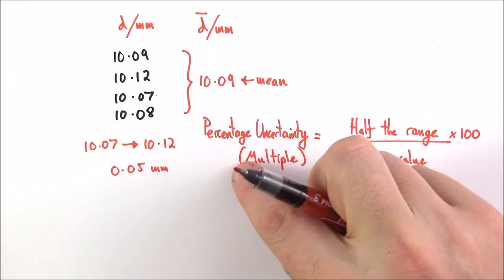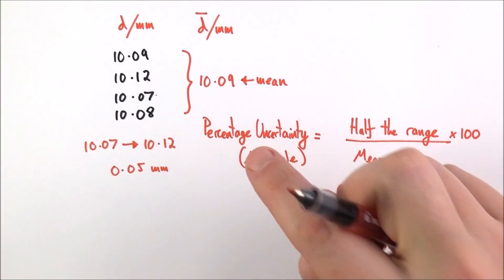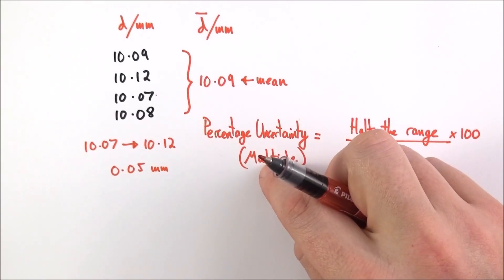So this is a method of working out percentage uncertainty for when you have repeated readings, which is very different if you just have a single value that you've recorded.